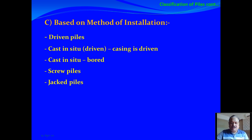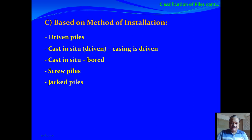The third criterion is how the pile is installed. If a pile is driven into the soil with a hammer, it is a driven pile — steel, concrete, or timber piles can be driven. The second type is cast in situ: in a driven cast-in-situ pile, a casing is initially driven into the soil, the hole is formed, and the casing is kept in place. If the hole is drilled and refilled with concrete without driving the casing, it is a bored cast-in-situ pile.